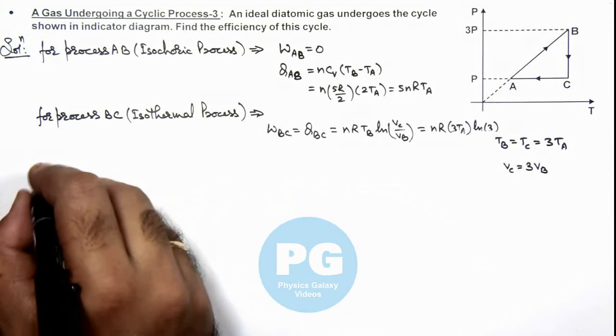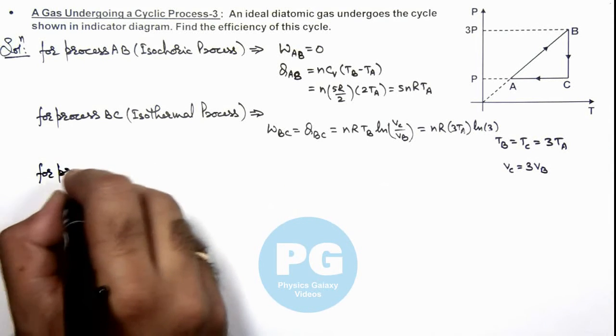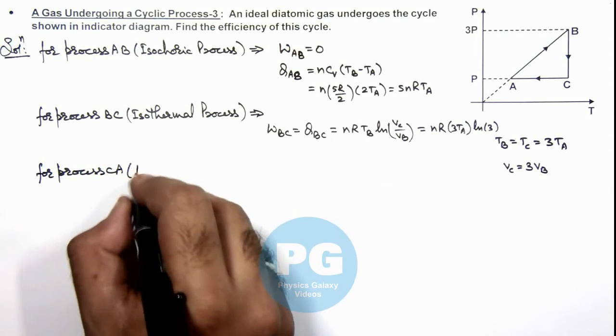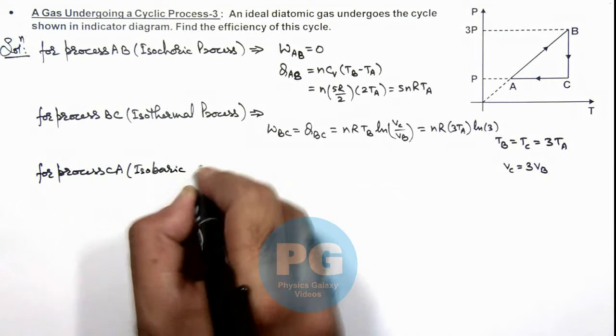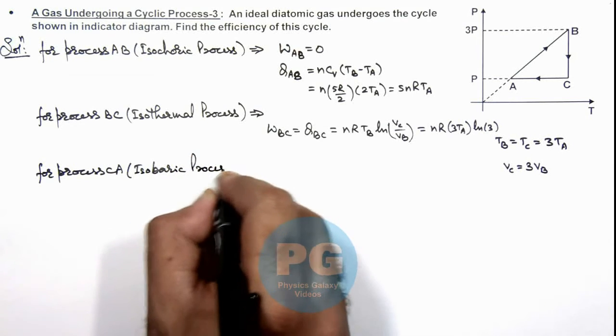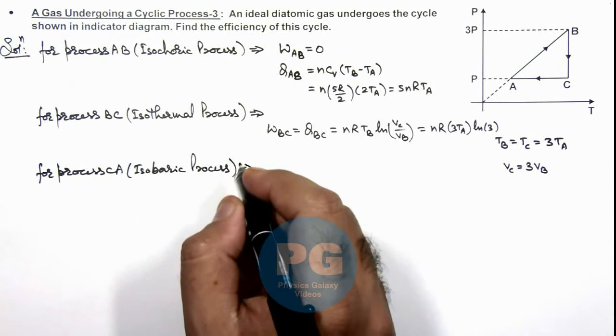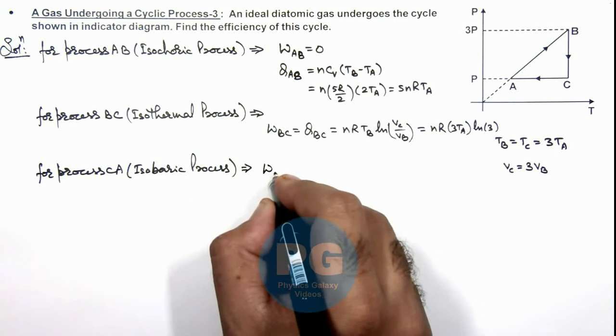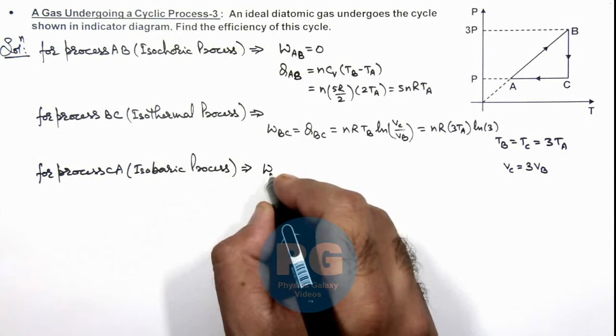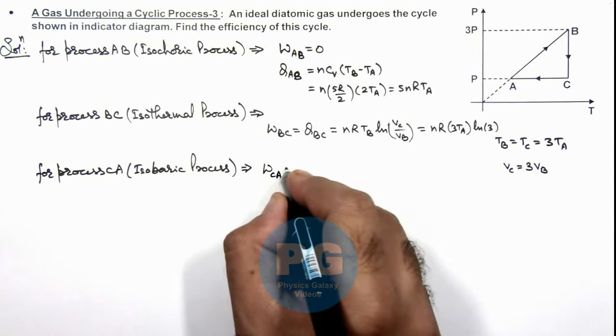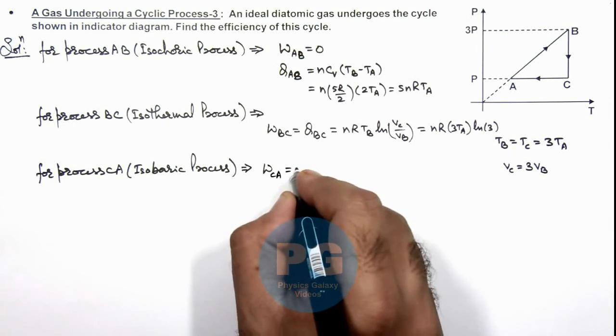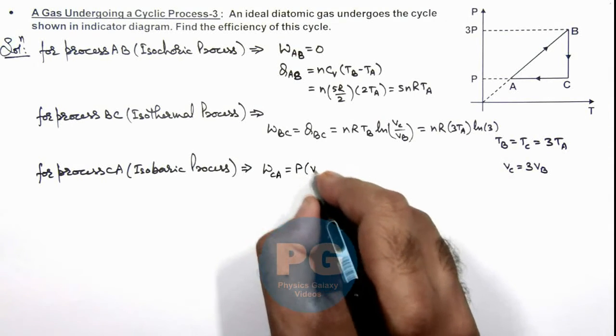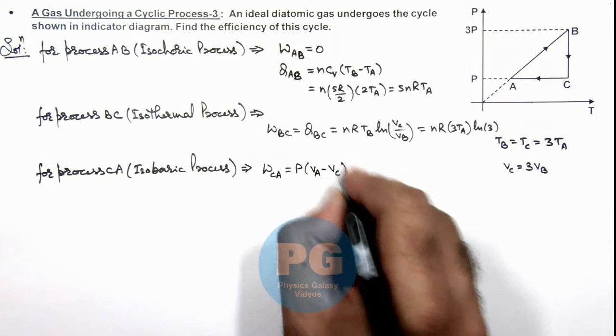So if we calculate further for process CA, which is an isobaric process. Here in isobaric process we can calculate the work done as, work done can directly be written as pressure multiplied by change in volume. So WCA is equal to pressure in C to A is P, multiplied by, this we can write as VA minus VC. And we already have VC is 3 times VB.